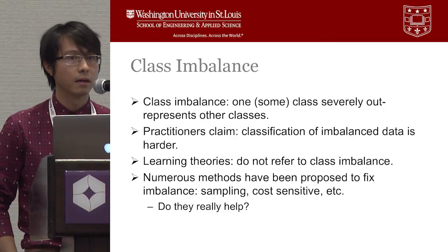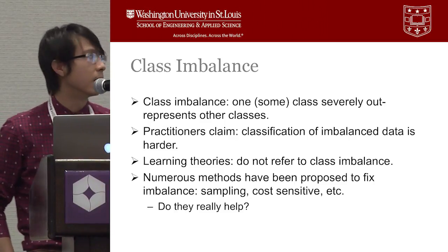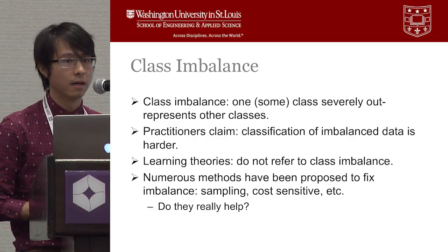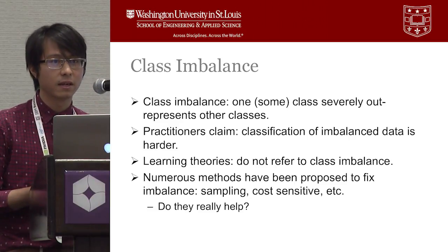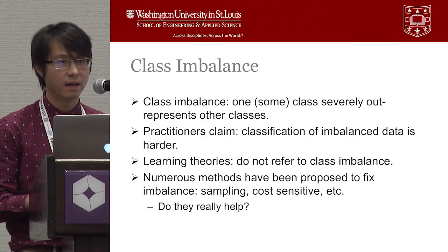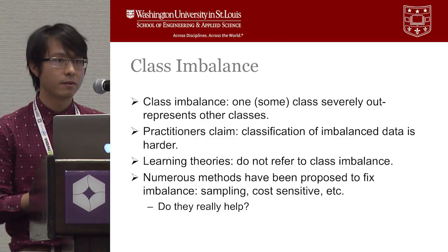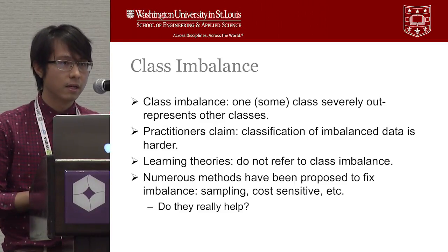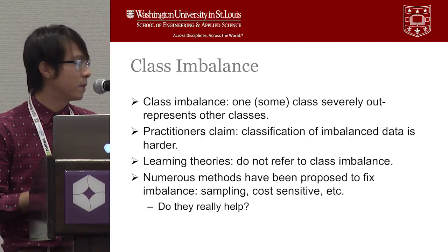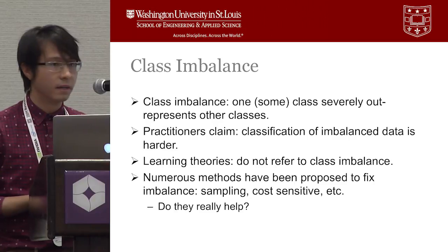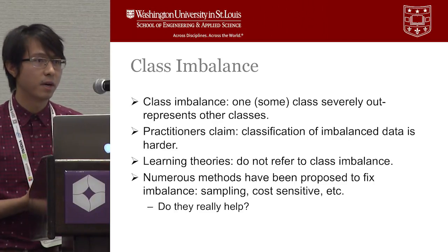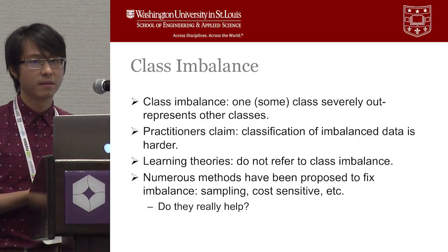We all know that class imbalance is a situation when one class severely underrepresents other classes. Some practitioners claim that class imbalance makes it harder for them to classify imbalanced data, but existing learning theory does not refer to class imbalance. Although there are many methods proposed to correct the imbalance, like various sampling methods or cost-sensitive methods, we have a question: do these methods really help?